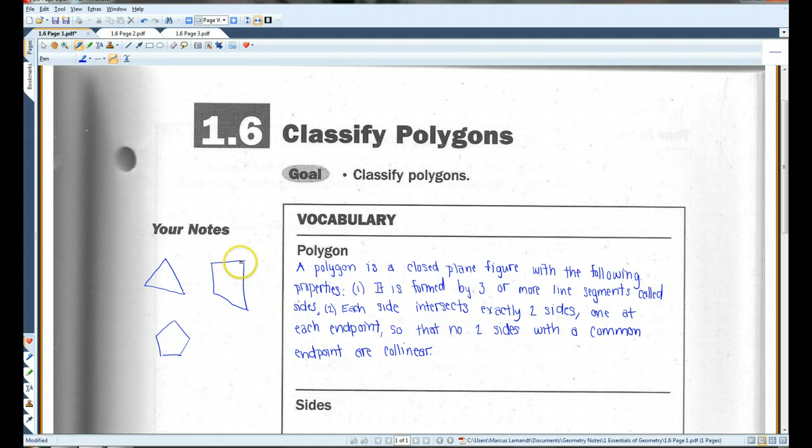So none of these points, no three points here are collinear. There's going to be a bend at each vertex.